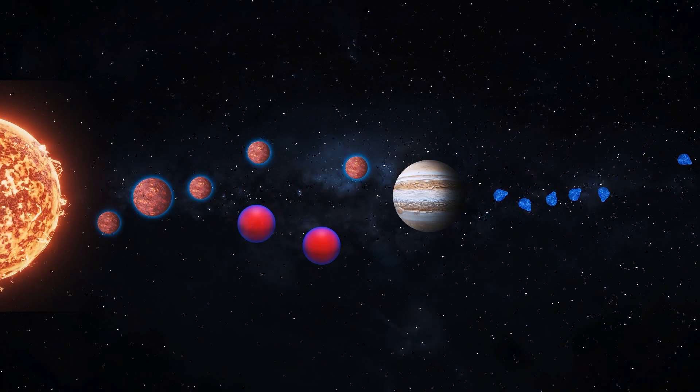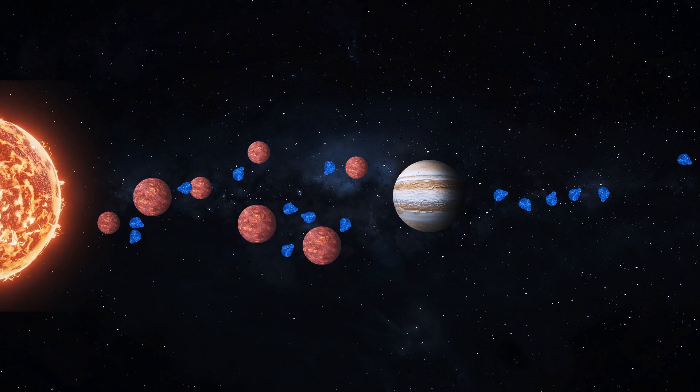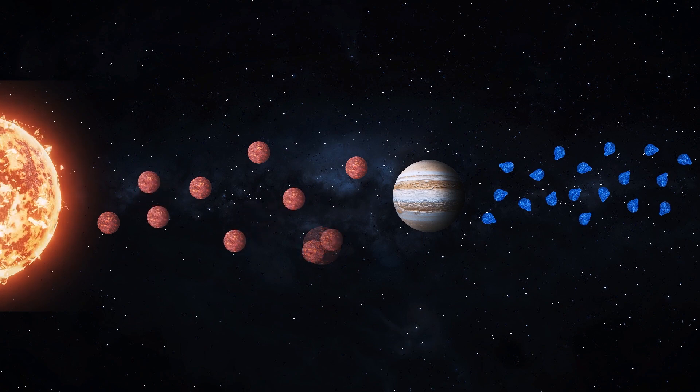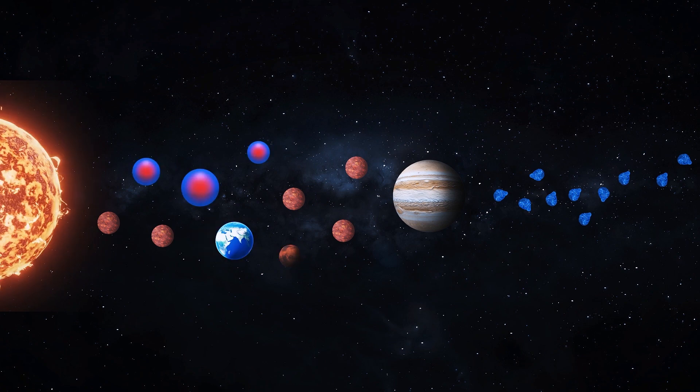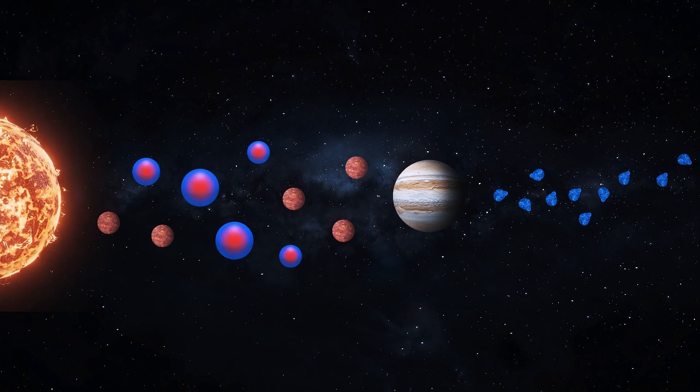One of the study's authors explained to Inverse.com that this version of events may account for Earth's relatively small size compared to equivalent planets in other solar systems because Jupiter may have also formed early on and blocked incoming material from fusing with the planetary embryos.